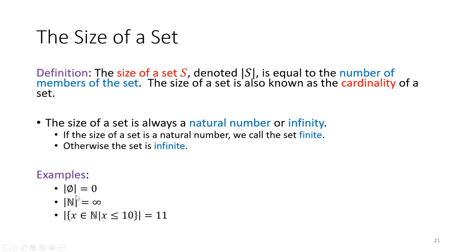For example, the size of the empty set is 0, and the size of the natural numbers is infinite. Here's a set in set builder notation: {x ∈ ℕ | x ≤ 10} — natural numbers x such that x is less than or equal to 10. This could also be written as {0, 1, 2, 3, 4, 5, 6, 7, 8, 9, 10}, and counting them we see there are 11 elements. So the size is 11, a natural number, making it a finite set.